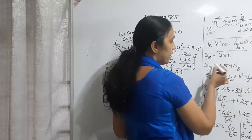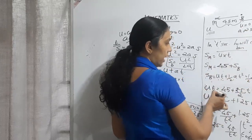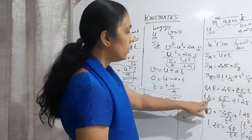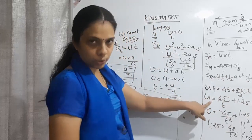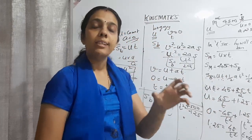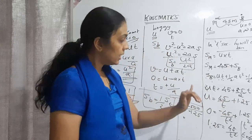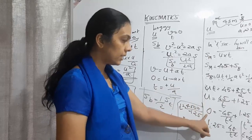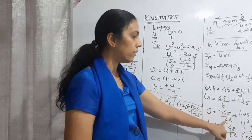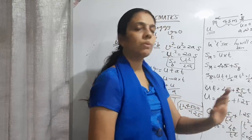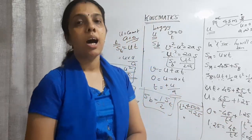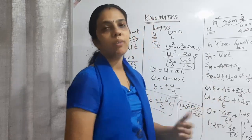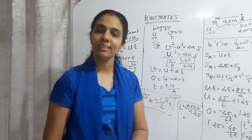We equate u·t = 45 + (distance covered by bus in t seconds). Getting u = 45/t + 1.25t, differentiating and setting to zero gives t = 6 seconds. After getting t, substitute back into u to find the minimum velocity. This gives the initial velocity the man needs. Clear?